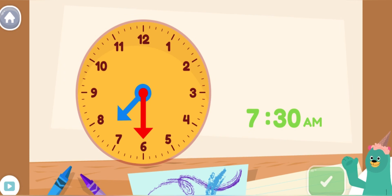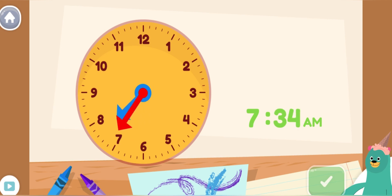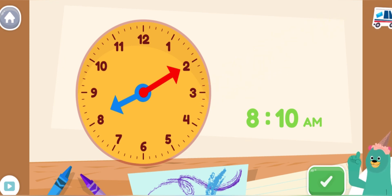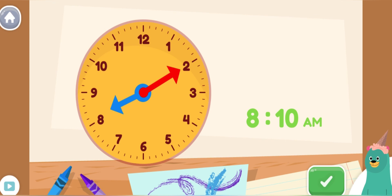Move the minute hand on the round clock to show 8 o'clock a.m. This is when my school starts. You made the clock show 8 o'clock a.m. My school starts at this time in the morning.